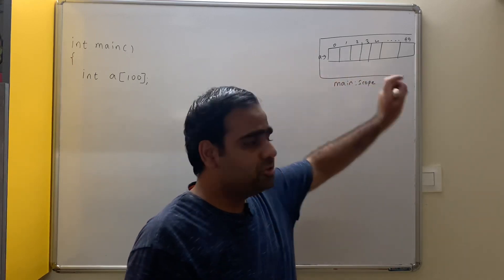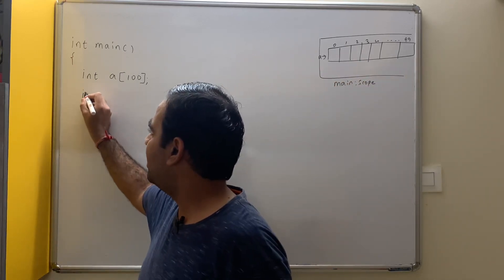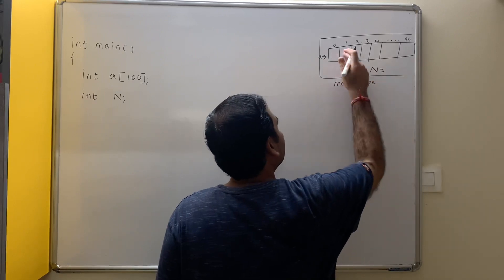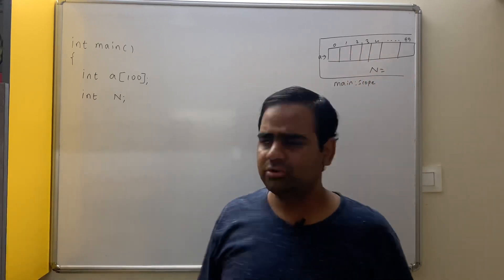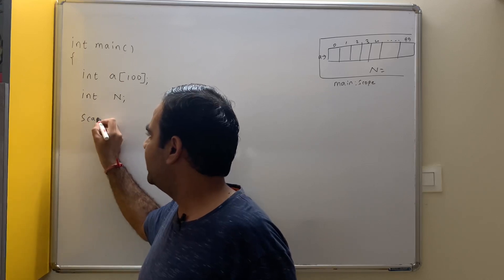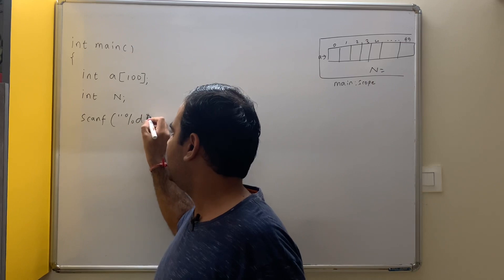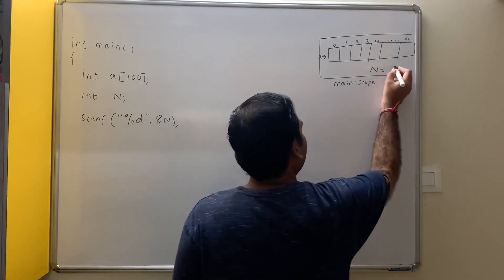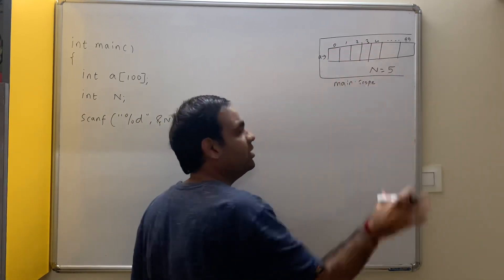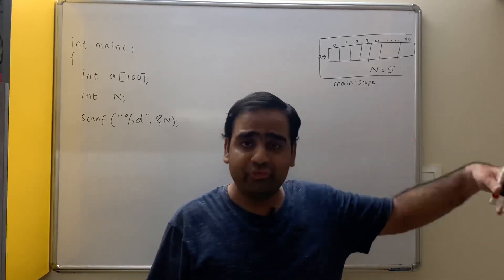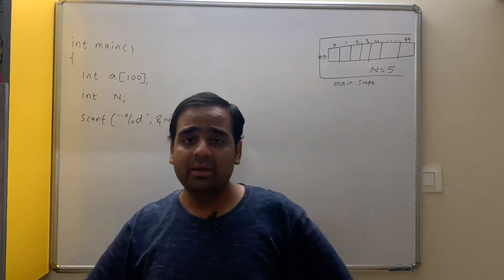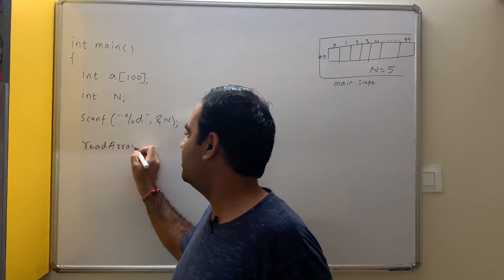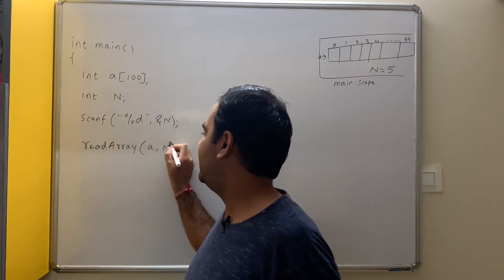It is not necessary to store all 100 elements; we may store n elements. So I declare int n and read it with scanf %d &n. If the value of n is 4, we store 4 elements; if n is 5, we store 5 elements and so on. We have already written a function called read_array, so I call read_array(a, n) to read n elements into the array.